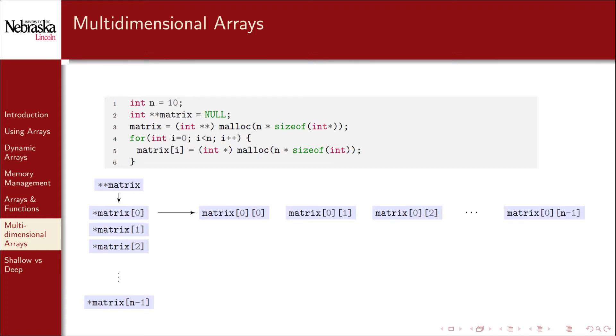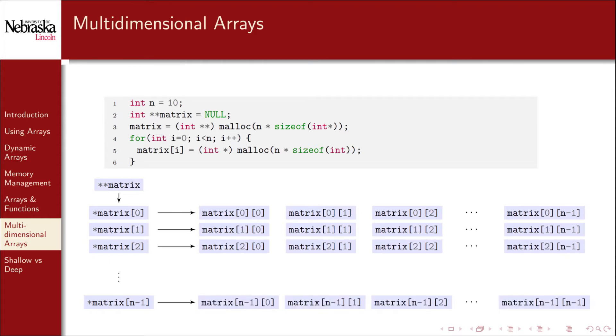As we loop through, malloc initializes an array of n integers. In the final loop, the last row is initialized, and we now have an n by n matrix of integers.